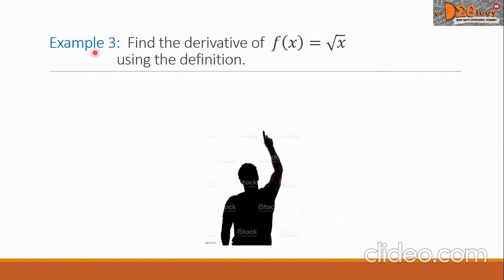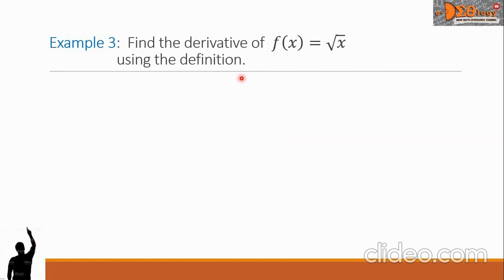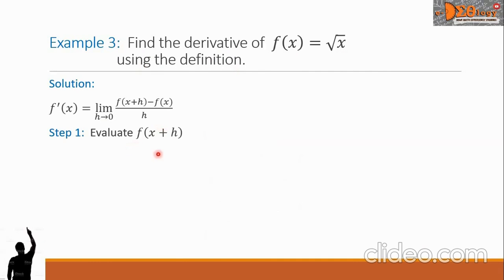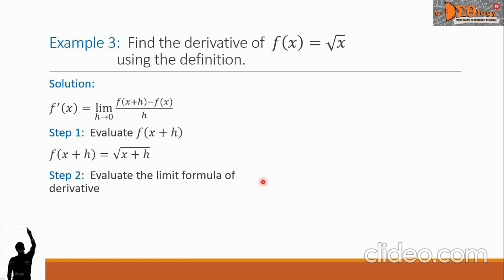Let us see Example 3. Find the derivative of f of x equals the square root of x using the definition. So we have here again our formula, and step 1 is to evaluate f of x plus h. So we have f of x plus h equals the square root of x plus h. Step 2 is to evaluate the limit formula of derivative. So we have now f prime of x equals the limit of the square root of the quantity x plus h minus the square root of x, all over h as h approaches 0.